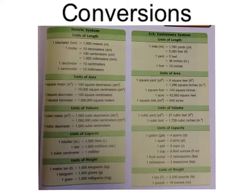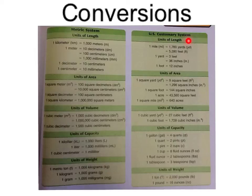Pause the video to review these two charts. On the left side, we have a chart of the metric system that covers units of length, units of area, units of volume, units of capacity, and units of weight. On the right, we have the US customary system, which is what we use. It also covers units of length, units of area, units of volume, units of capacity, and units of weight.